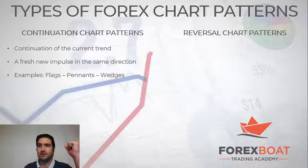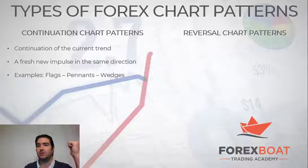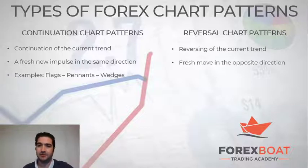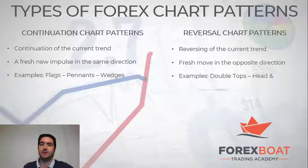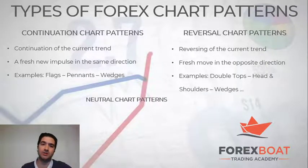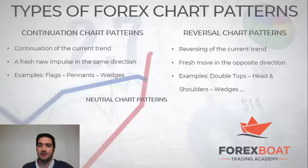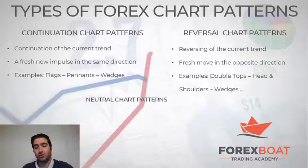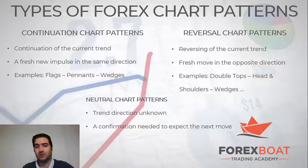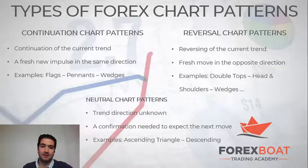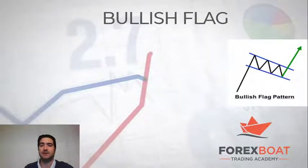Reversal Chart Patterns indicate a reversal. You will see a fresh move in the opposite direction of the main trend. Examples are double tops, head and shoulders, and wedges. Moving on with Neutral Chart Patterns — this type doesn't indicate any direction. All you should do is wait for a confirmation to expect the next move. Examples of Neutral Chart Patterns: Ascending, Descending, and Symmetrical Triangle.